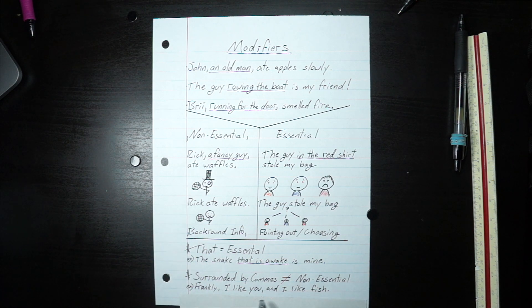If we did that, frankly, and I like fish, it doesn't make sense. And the reason it doesn't is because this is not a modifier. Just because it's surrounded by commas doesn't mean that you can take it out of the sentence and that it's a non-essential modifier.